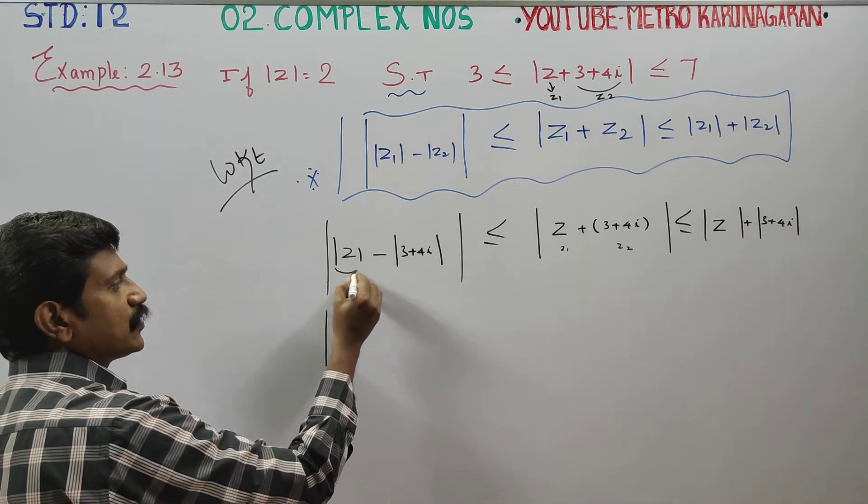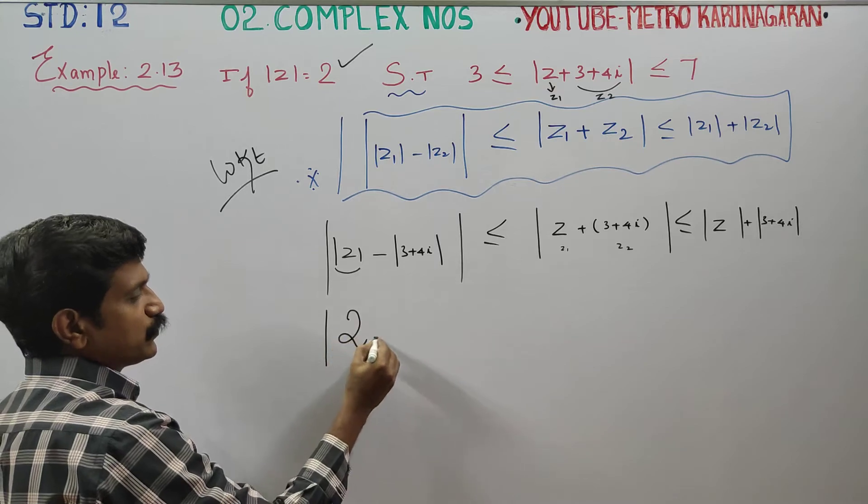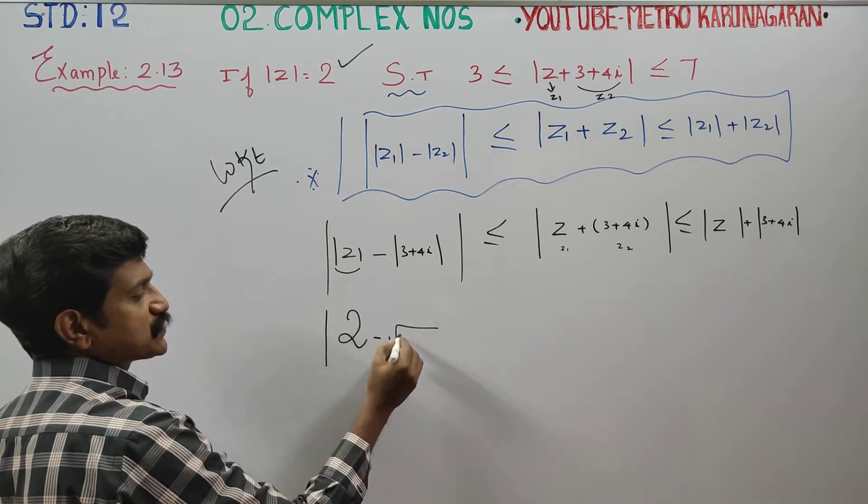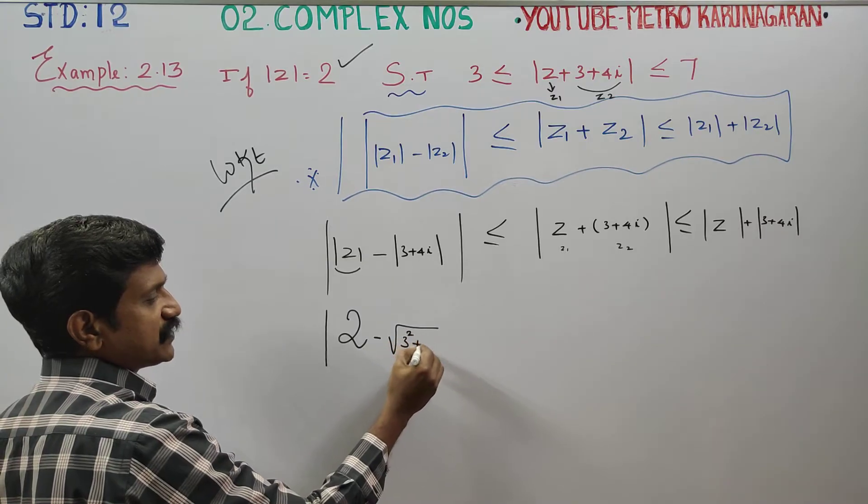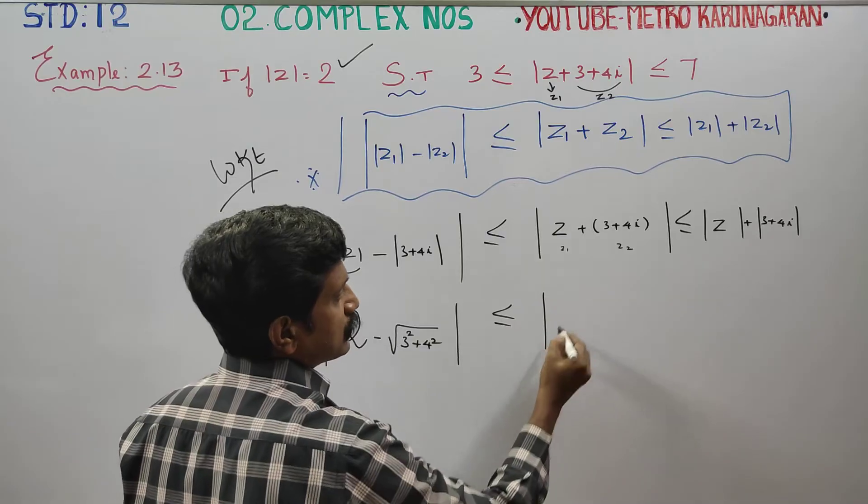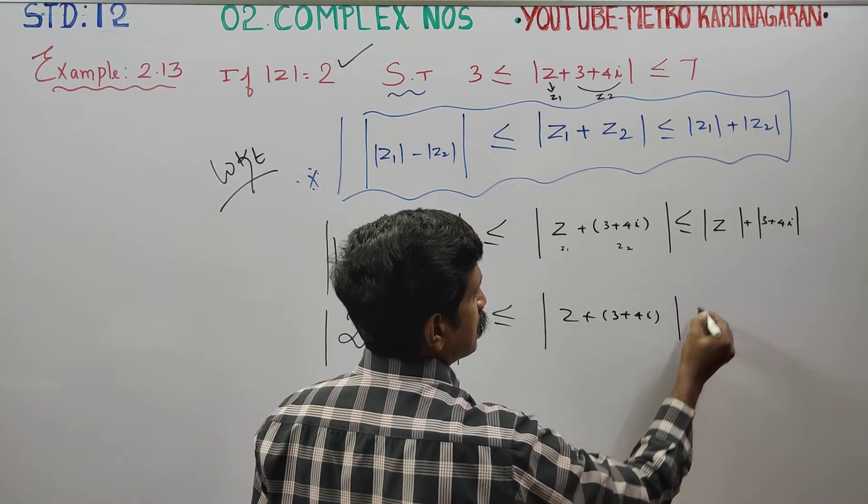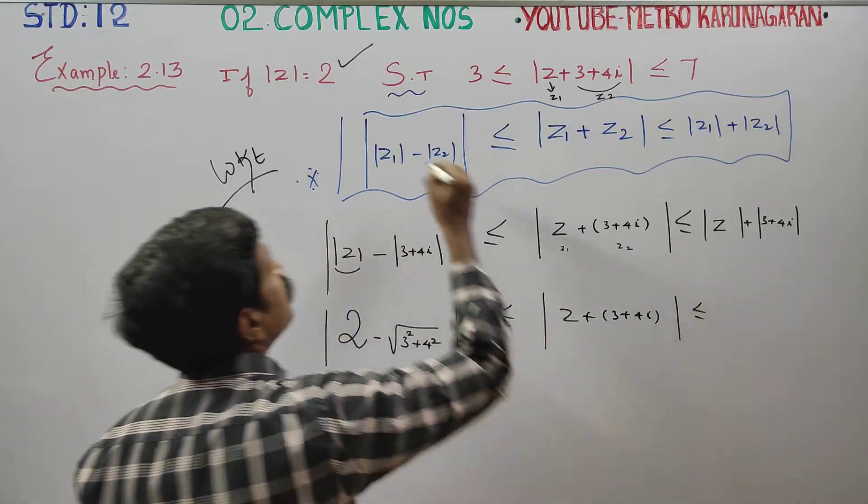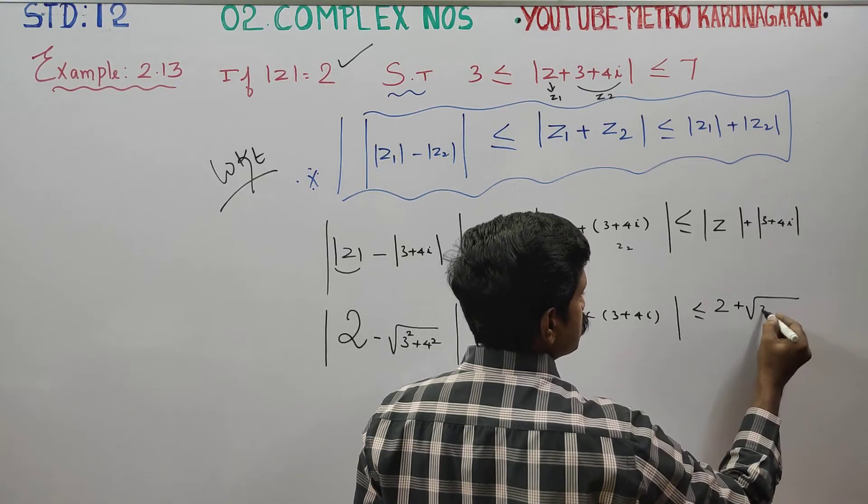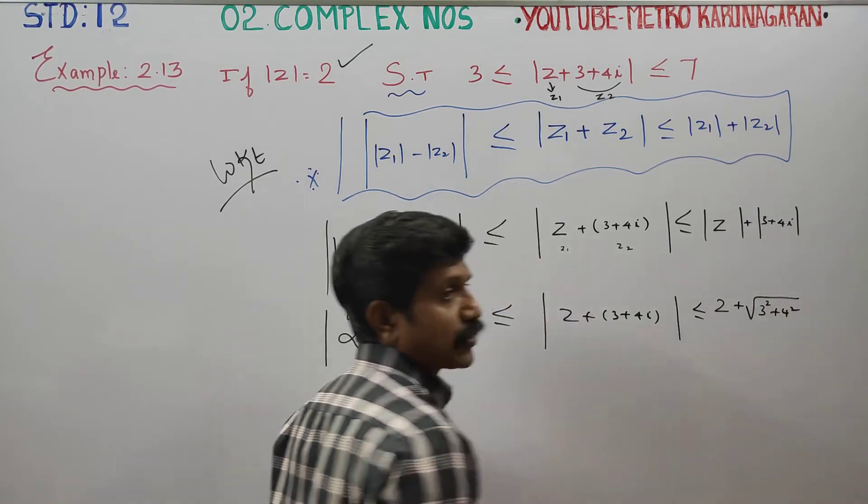Next stage: modulus of z2, we're given as 2. Square root of real part square plus imaginary part square: 3 square plus 4 square. Less than or equal to z plus 3 plus 4i, less than or equal to modulus of z is 2, plus square root of 3 square plus 4 square, which is the modulus.